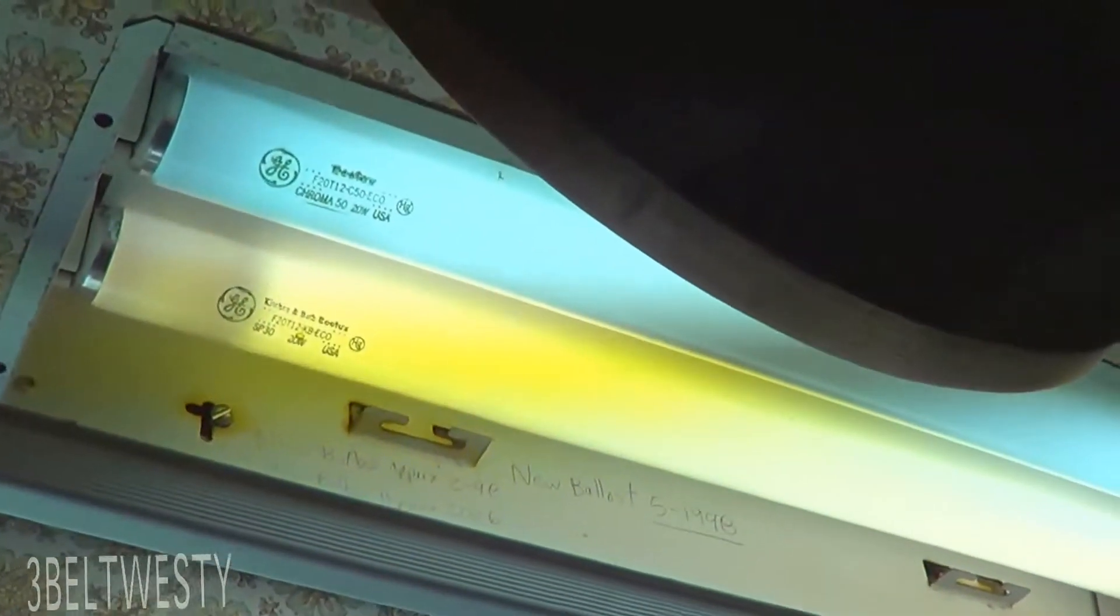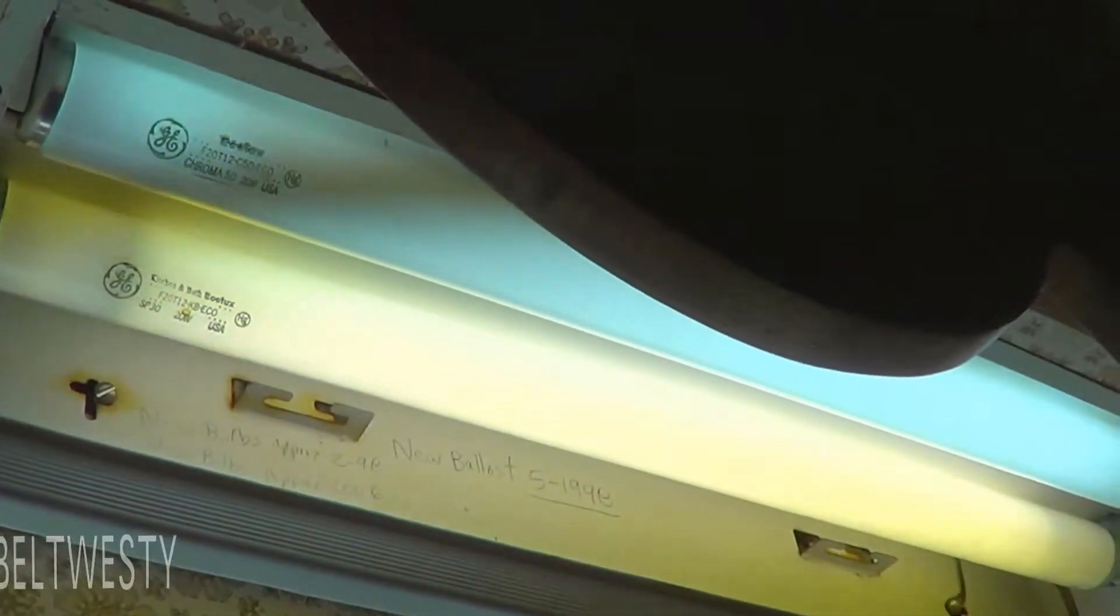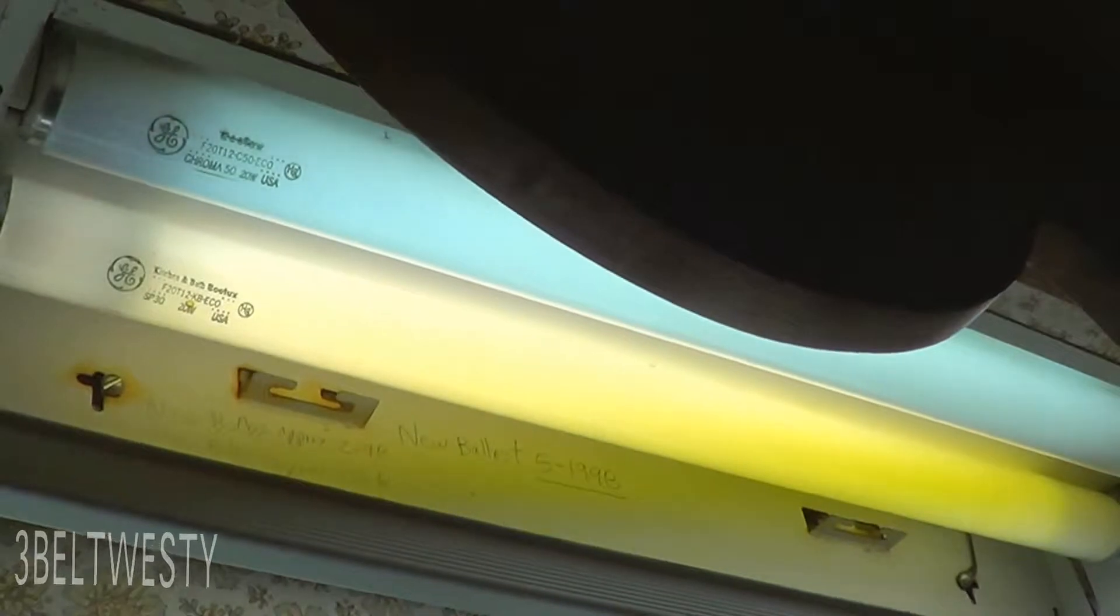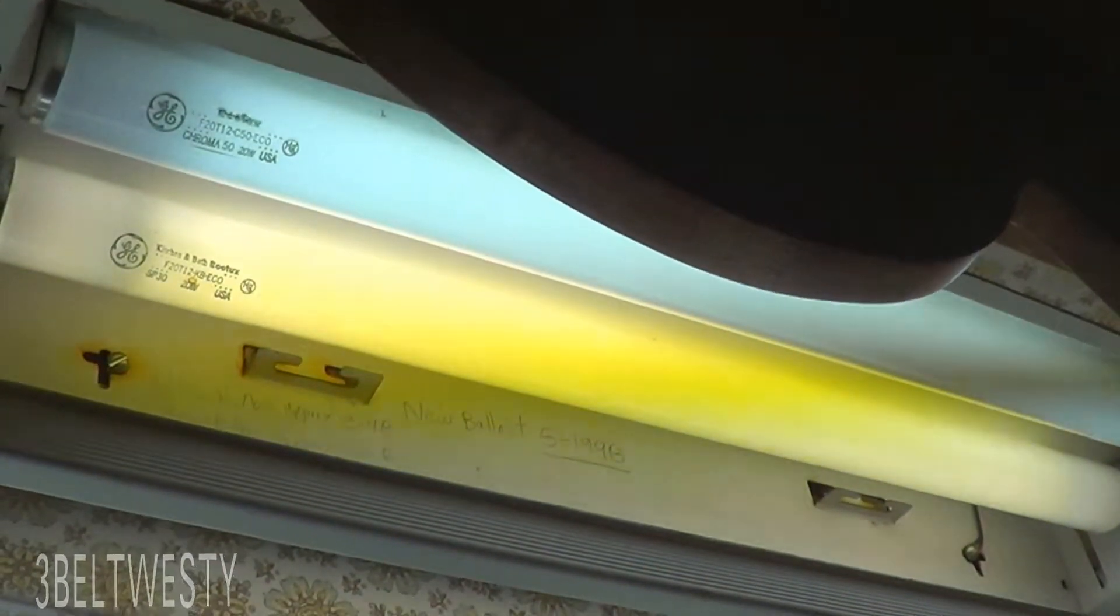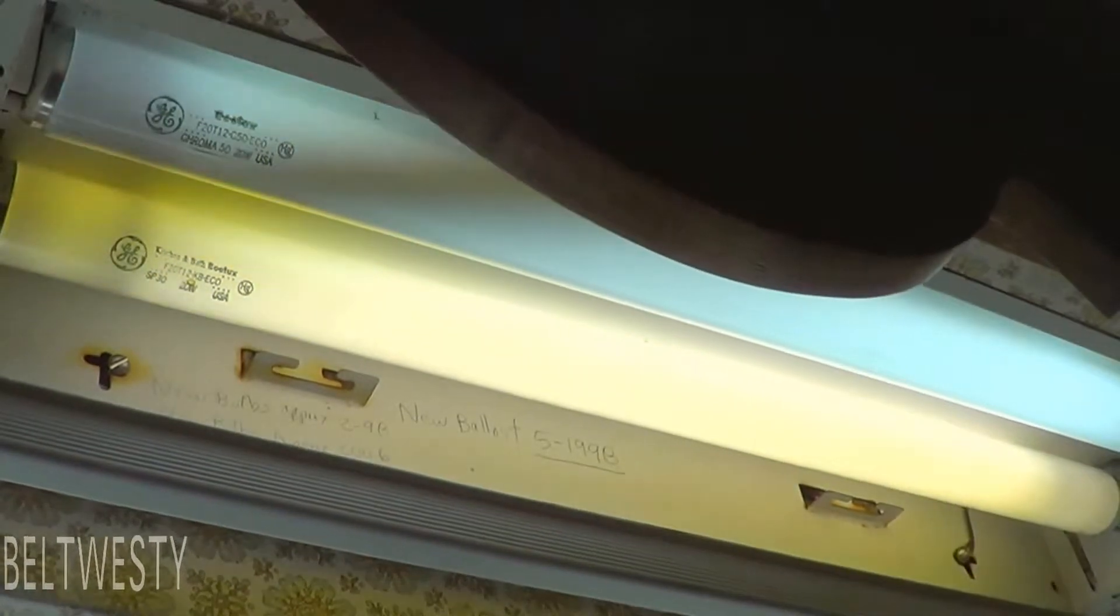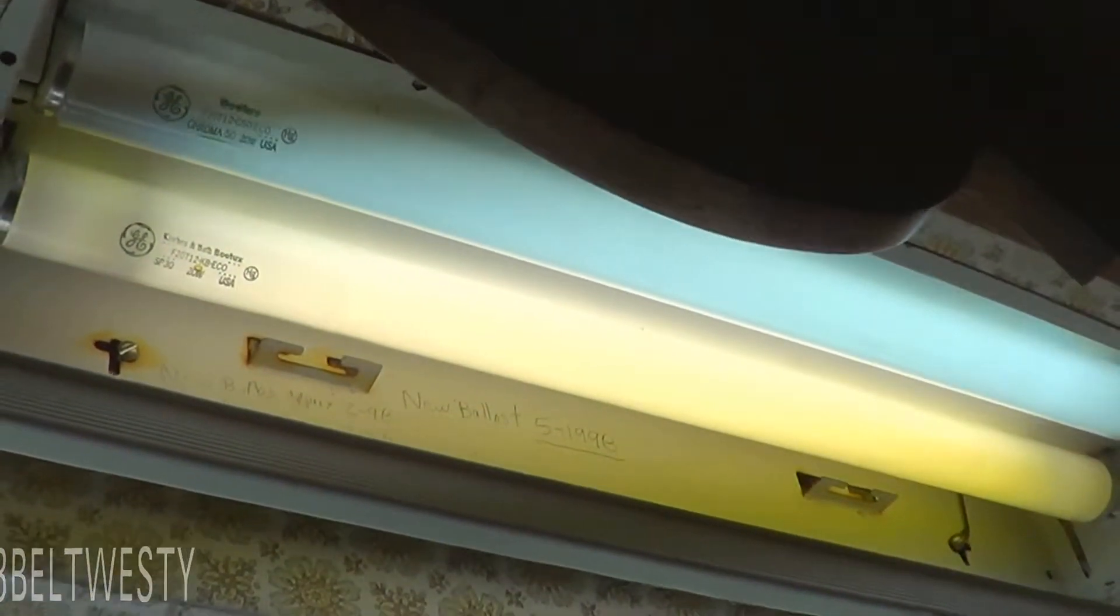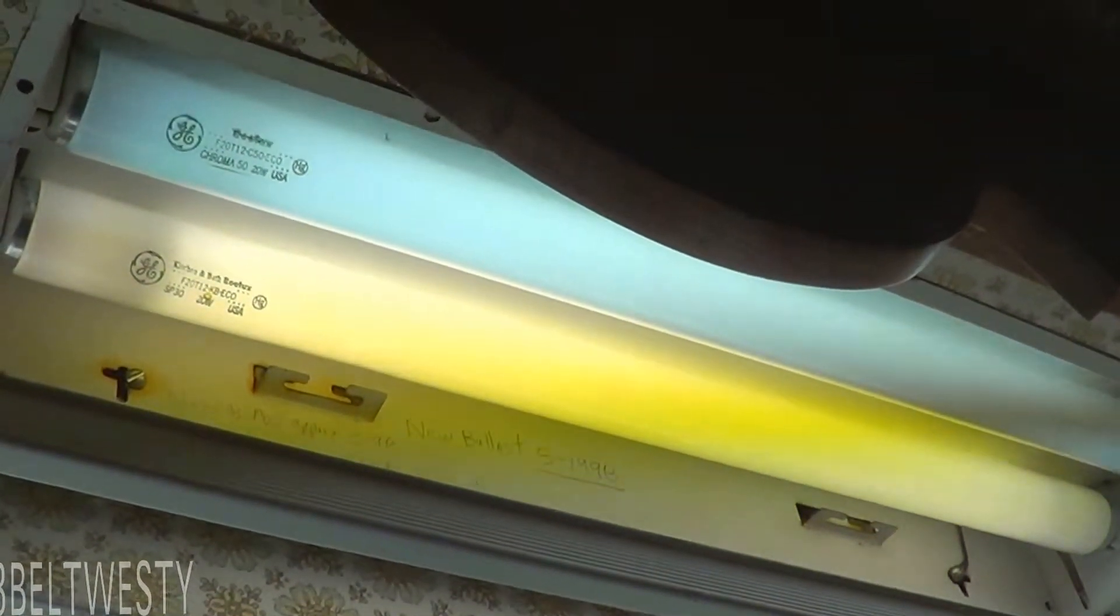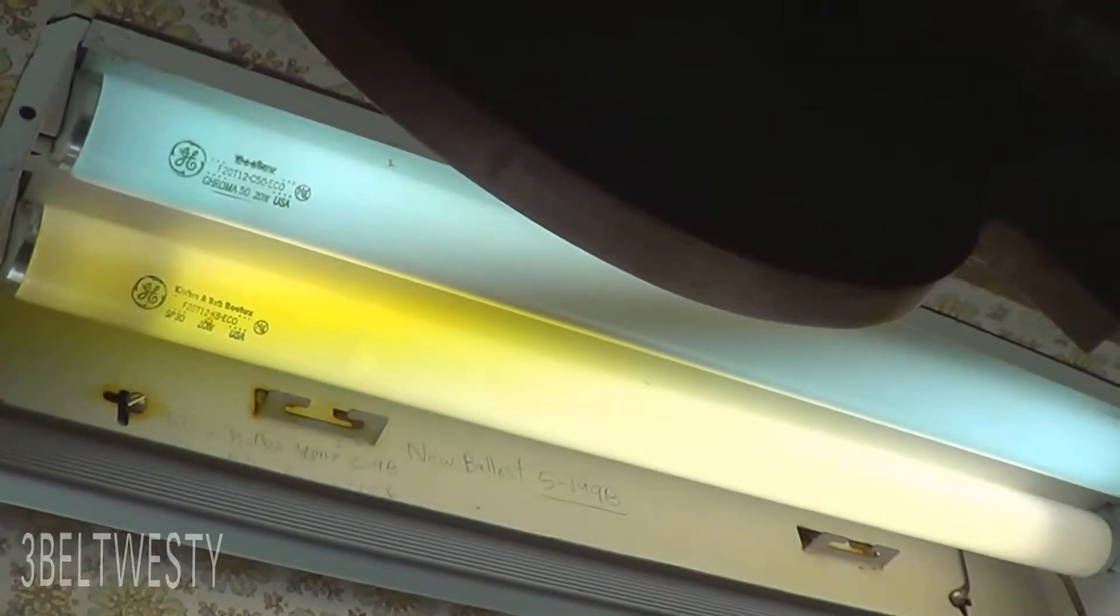Got off eBay to replace these two foot F20 T12s. I've got a Chroma 50 and also a kitchen and bath lamp up there. They've been up there forever. They're kind of a nightlight. So you got two of them, 20 watts each.